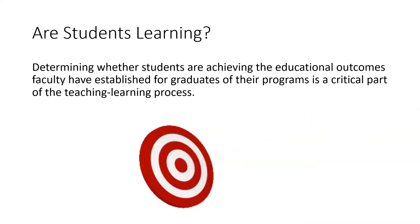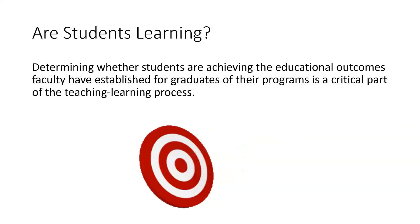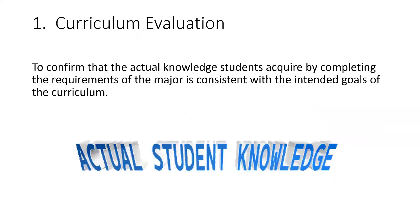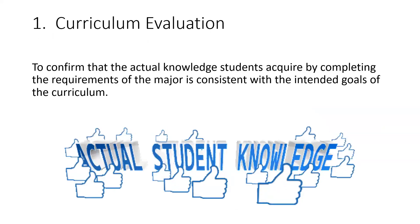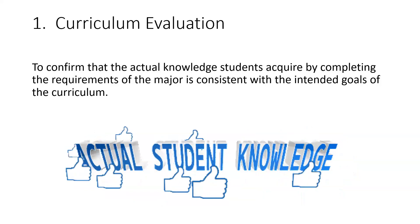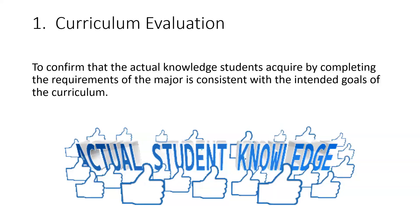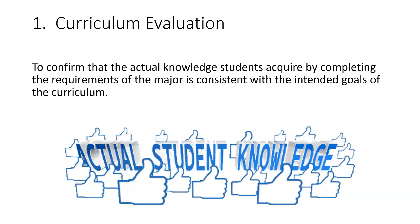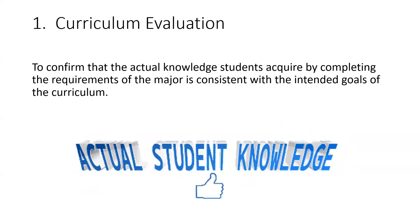So are students learning? It's really important to determine whether students are achieving the educational outcomes we've established, because it is a critical part of the teaching-learning process. Student success is everyone's goal, and we want them to succeed, move on, and master the information we are imparting to them. One reason for measuring and assessing student learning outcomes is curriculum evaluation — to confirm that the actual knowledge students are acquiring by completing requirements is consistent with the intended goals. Meaningful assessment isn't bean counting or teaching to the test.